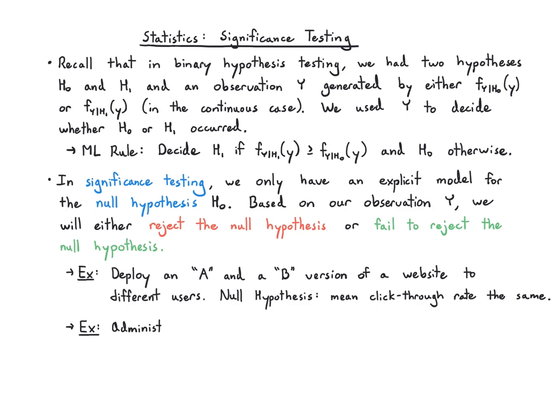As another example, let's say you administer a new drug to a group of patients and a placebo to a control group. This is really common in testing drugs. The null hypothesis is that the mean cholesterol, let's say you're trying to lower cholesterol, stays the same. Something that you would want to see is that the new drug lowers cholesterol. That would be when we're rejecting the null.